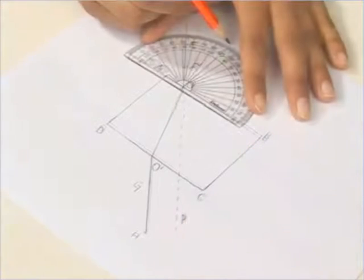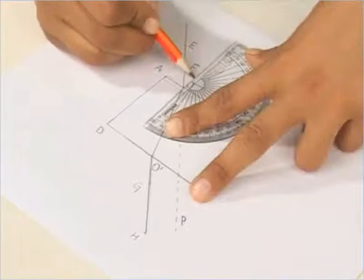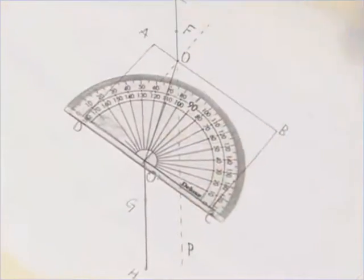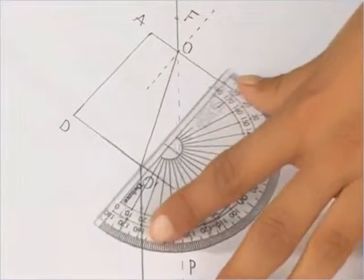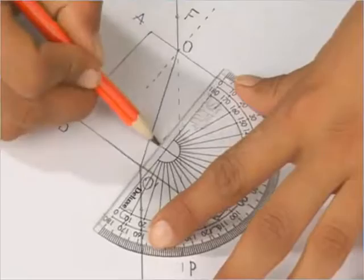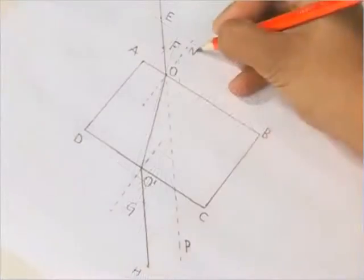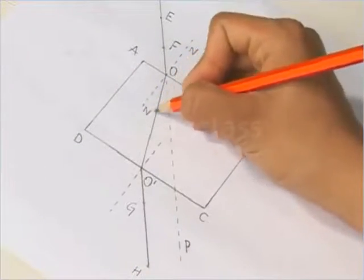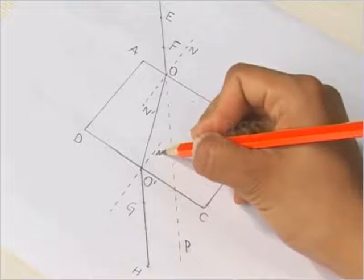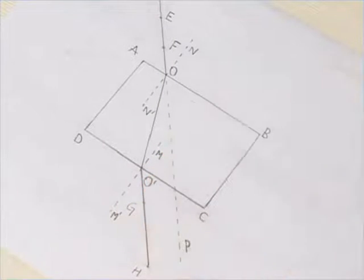Draw lines NN' and MM' at O and O' perpendicular to AB and CD respectively.